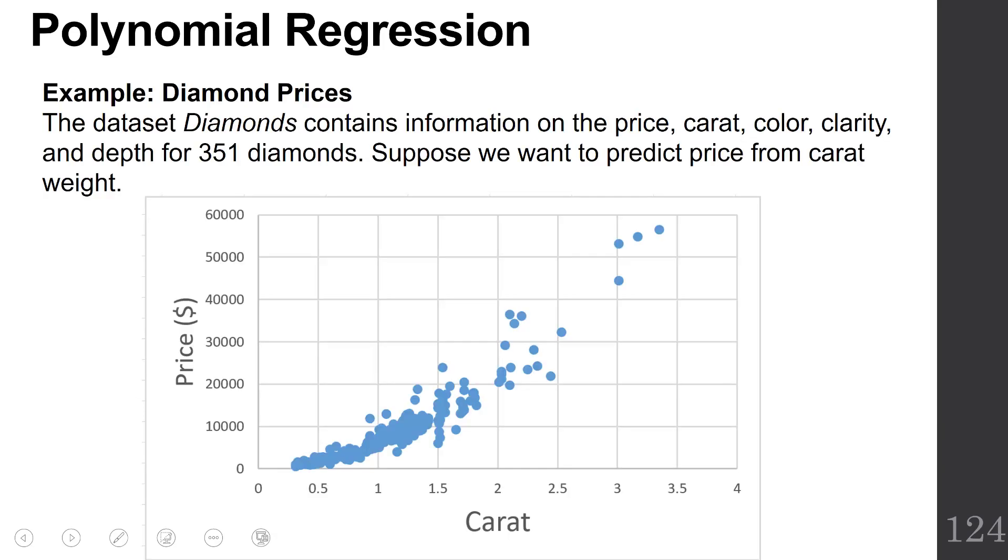For example, the diamond data set that you can download is included in Canvas along with your lecture notes. This data set contains information on the price, carat, color, clarity, and depth for 351 diamonds.